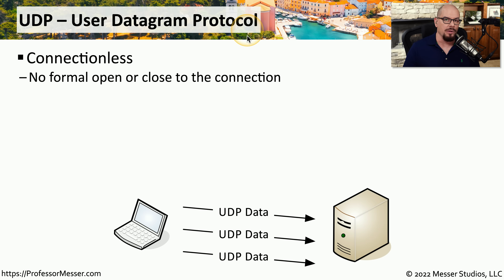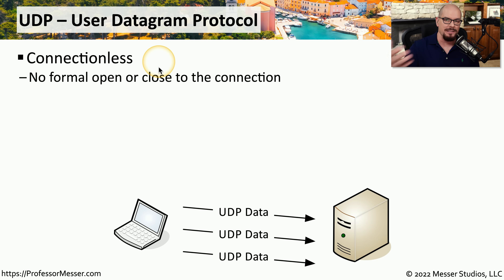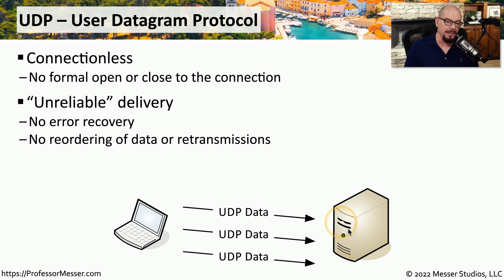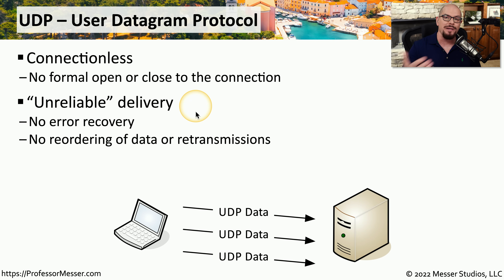UDP is the User Datagram Protocol. With TCP we had a connection-oriented flow, but UDP is a connectionless flow. There is no formal process to set up a traffic flow, and there's no formal process to tear that down at the end. UDP simply sends data from one place to the other — it's a very simple transaction. Because there's no acknowledgment being sent by the destination device, we refer to UDP as unreliable. This doesn't mean UDP does not work as well; it only means we have no receipt or knowledge that the information sent was really received by the device on the other side.